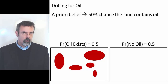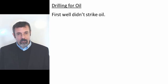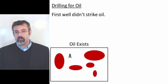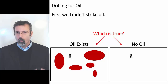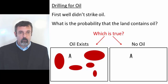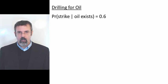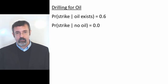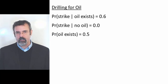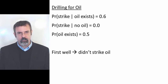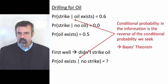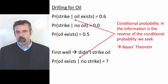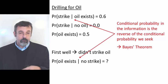So you drill your first oil well, and this well comes up dry. One of two things is possible: it's possible that the land contains oil and this particular well just didn't hit it, or it's possible that the land doesn't contain oil at all. What we want to know is, given that this first well did not strike oil, what is the probability that the land contains oil? Notice something interesting — the conditional probability in our question is the reverse of the conditional probability in the information we have. Any time you have a problem where the conditionality of a probability reverses, you'll find a use for Bayes' Theorem.